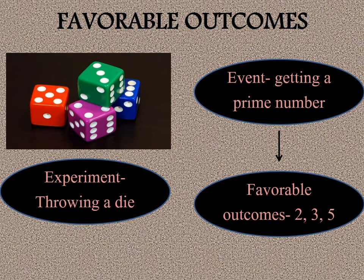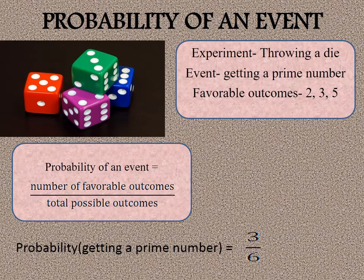Whenever we talk about an event, the random experiment of throwing a die has possible outcomes 1, 2, 3, 4, 5, 6. But which outcomes favor the event? For the event of getting a prime number, the favorable outcomes are only 2, 3, and 5 — so there are 3 favorable outcomes.